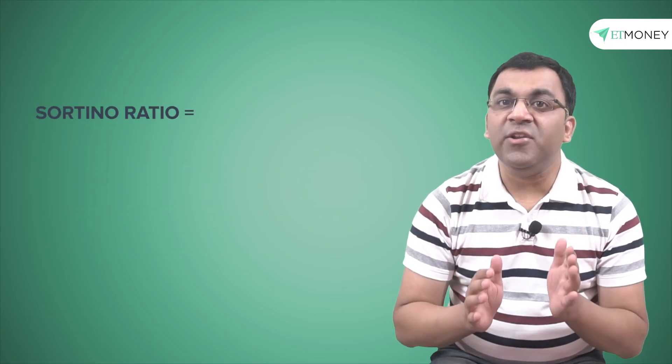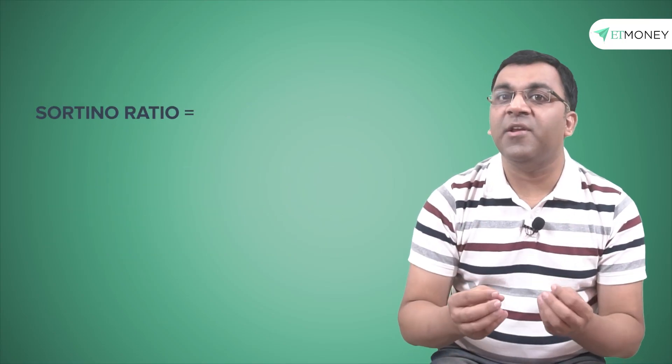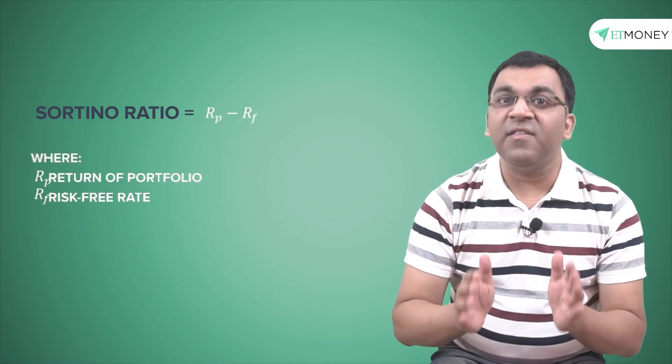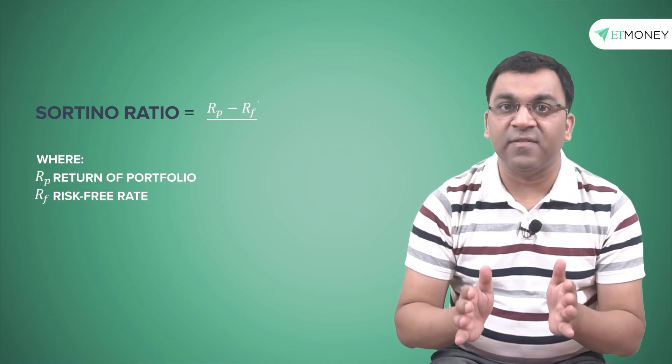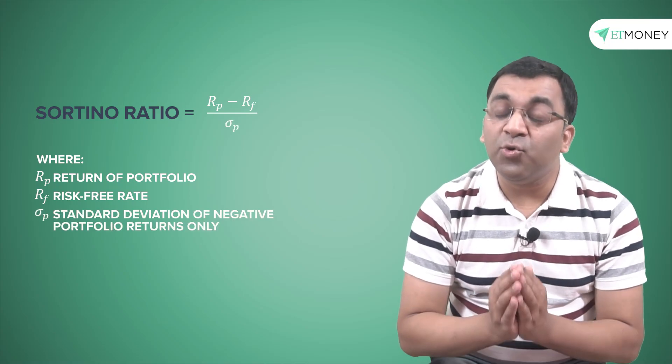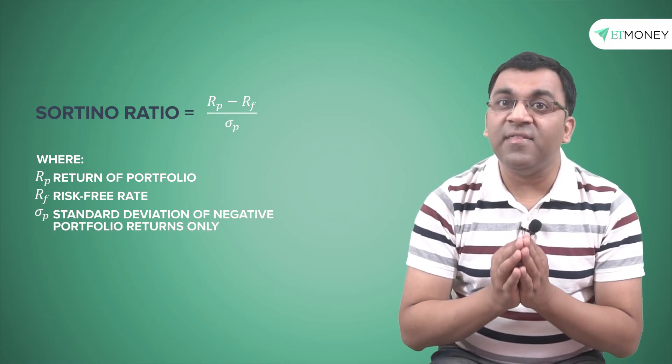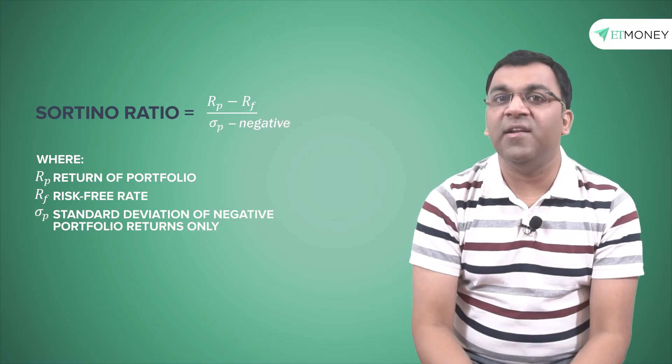So as a formula, the Sortino ratio, much like the Sharpe ratio, subtracts the risk-free return from the fund returns. But instead of dividing it by the total standard deviation, it divides the difference by the downside deviation.